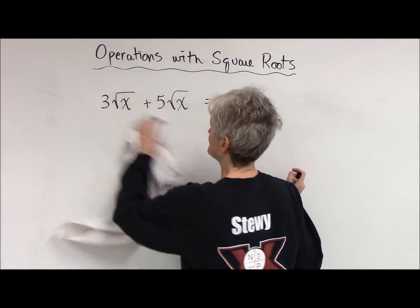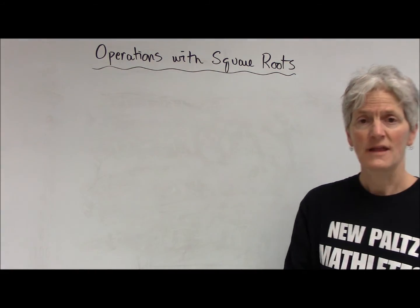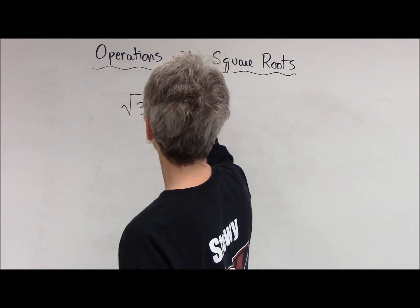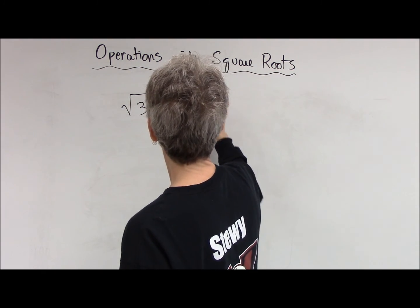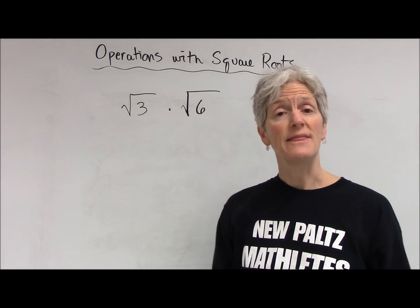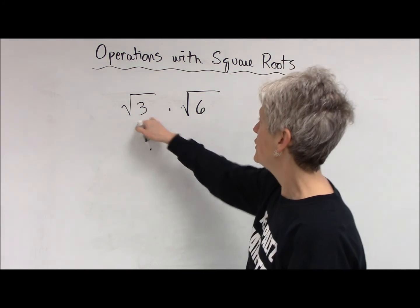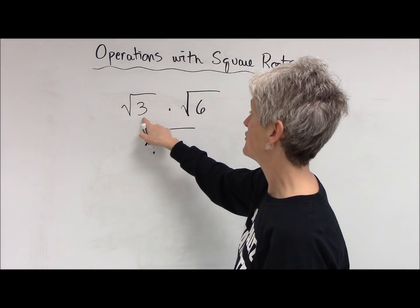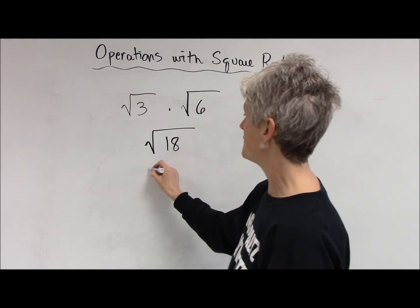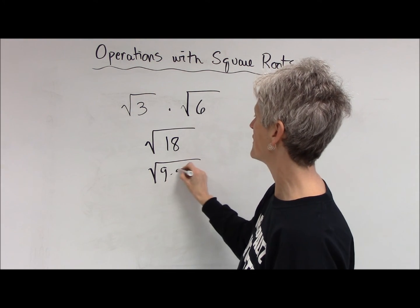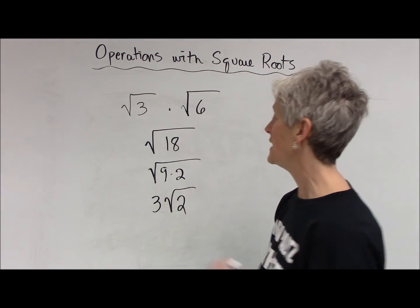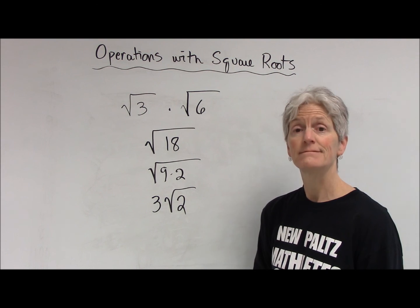Multiplying and dividing. If I'm multiplying square roots, you can decide what you want to do first — it's up to you. You can either simplify each square root individually and then multiply, or you can multiply them together. This is just the square root of 3 times 6, or 18, and then you can simplify. That has a perfect square of 9 as a factor, so that's going to simplify to 3 times the square root of 2.